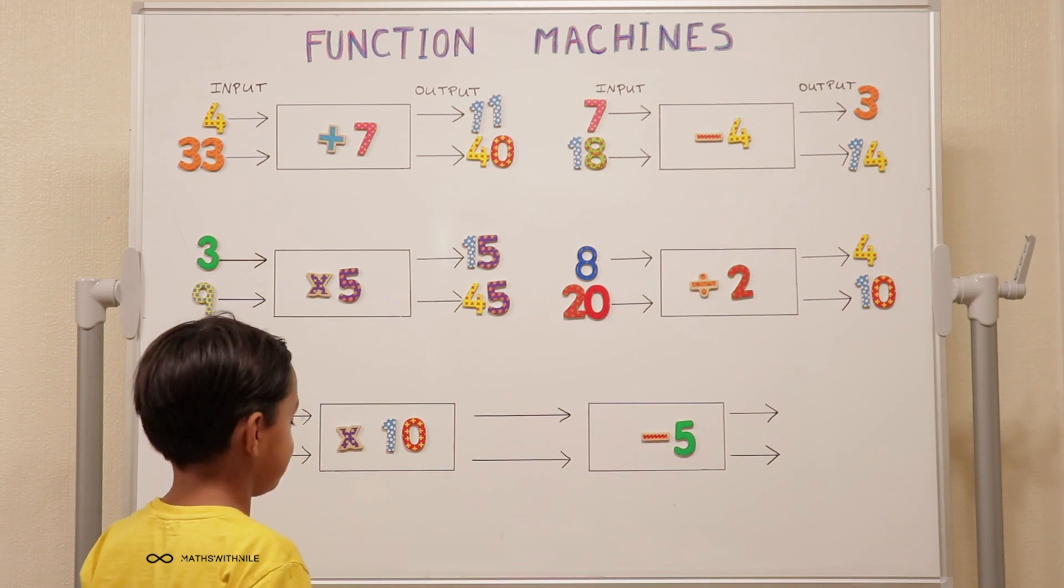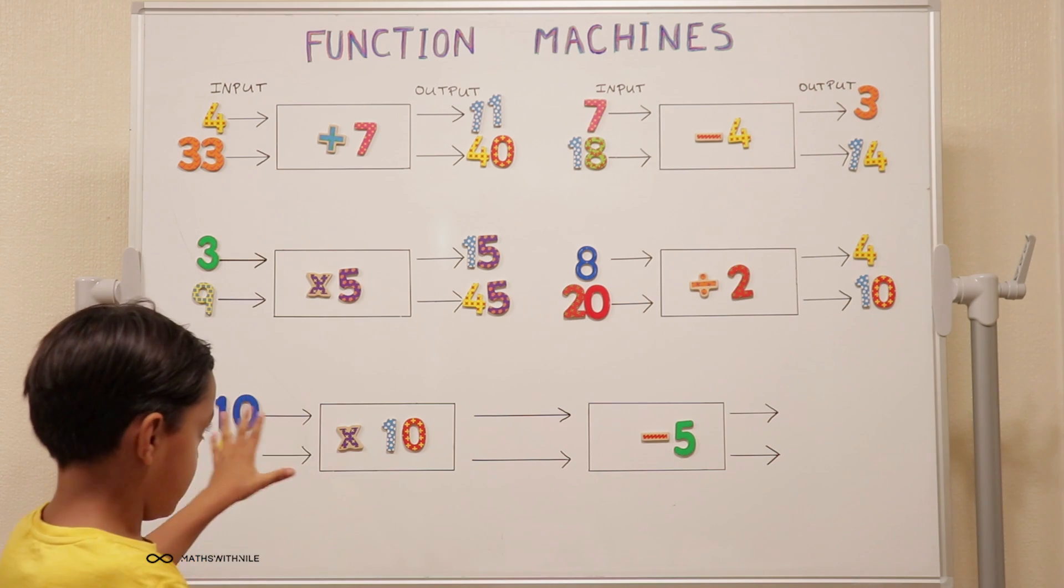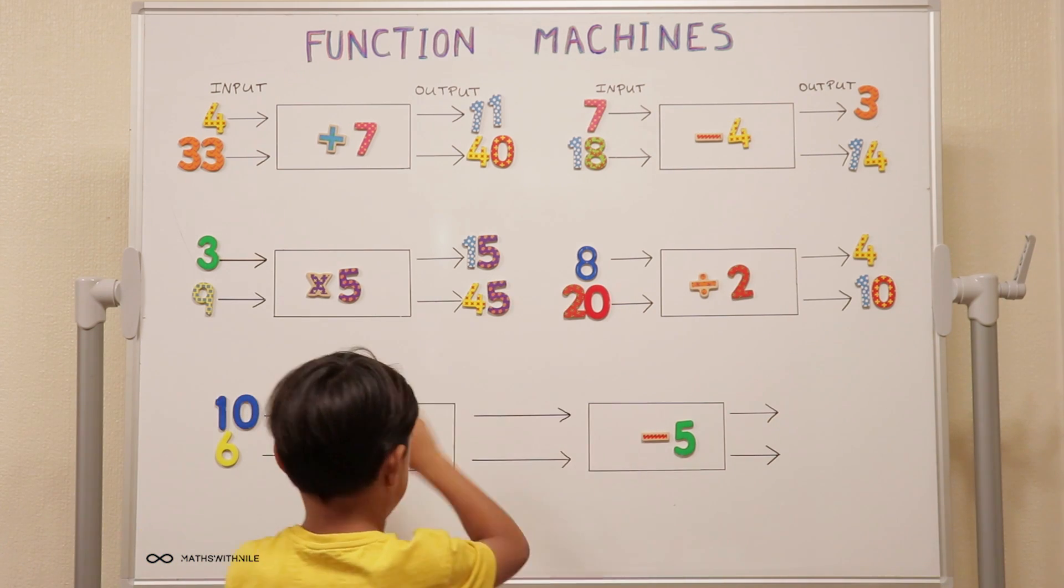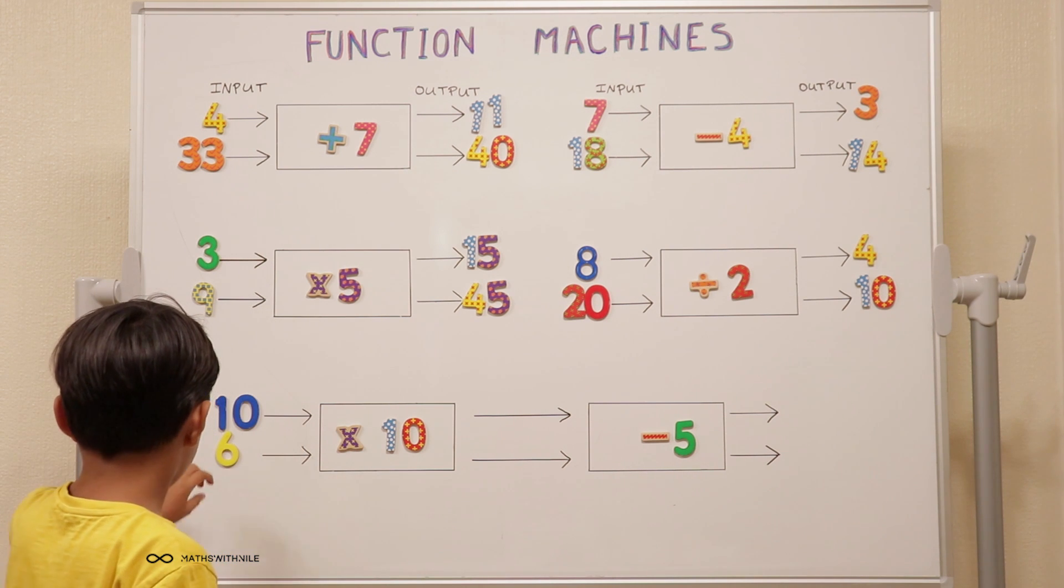Now this one. What's different with this one? It has two boxes. Two boxes with two rules. So how are you going to work it out?